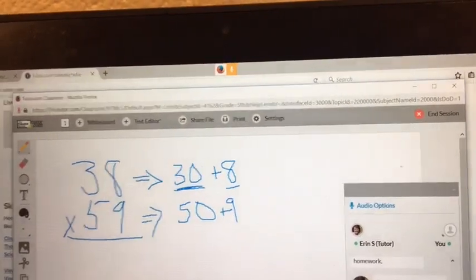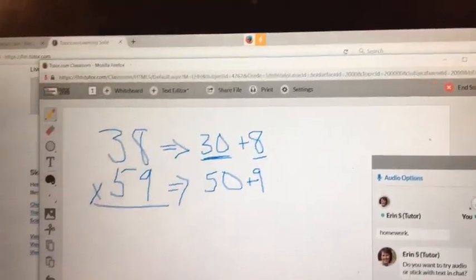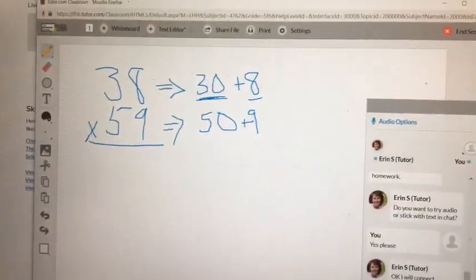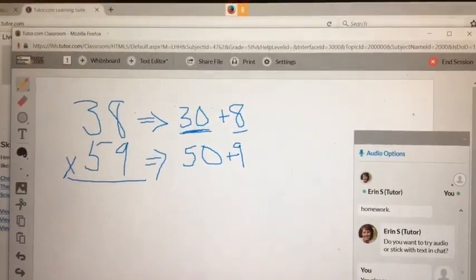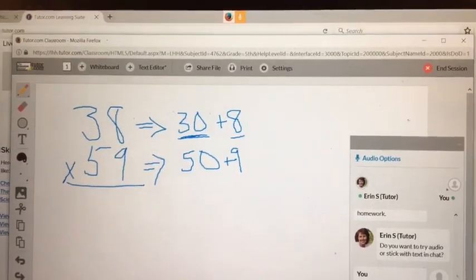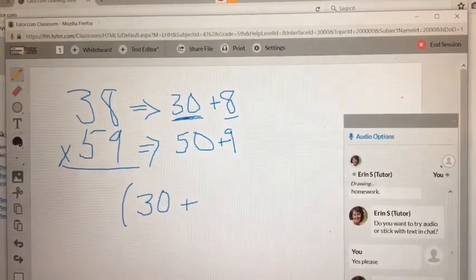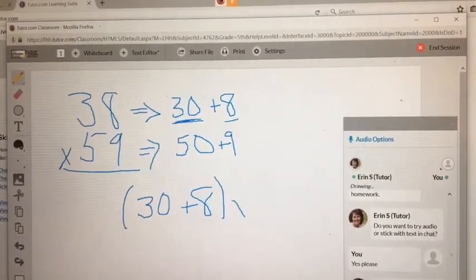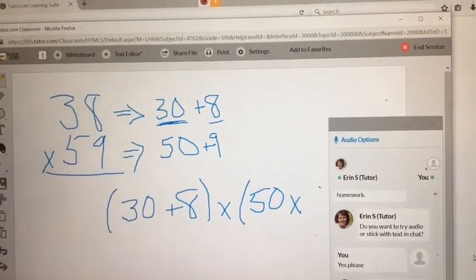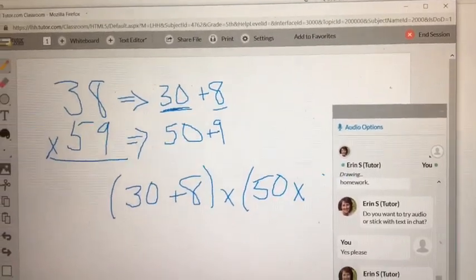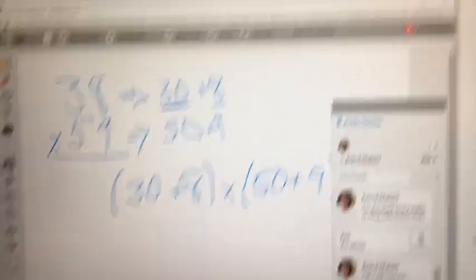So I guess the example that I'm seeing shows it written kind of like this. 30 plus 8 times 50 plus 9.